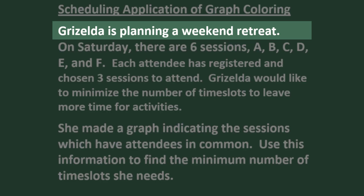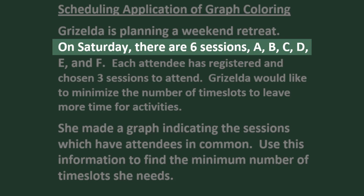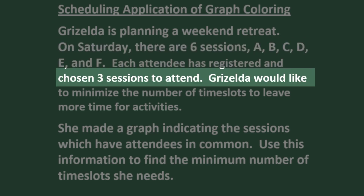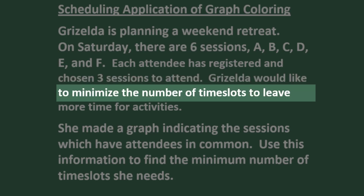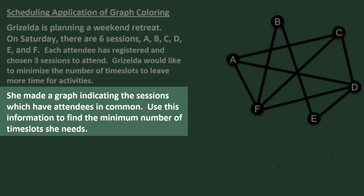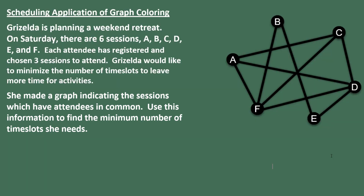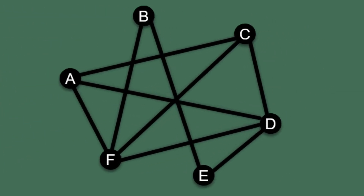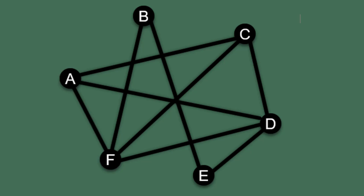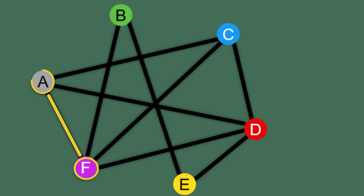Now let's look at this application of graph coloring, which involves scheduling. Griselda is planning a weekend retreat. On Saturday there are to be six sessions — A, B, C, D, E, and F — and each attendee has registered and chosen three sessions to attend. Griselda would like to minimize the number of time slots to leave more time for activities. She made a graph indicating the sessions which have attendees in common. Each vertex represents a session, and if two vertices are adjacent, that means at least one attendee would like to attend both sessions, so Griselda needs to ensure those two sessions are not held at the same time. We can create a graph coloring where each color represents a different time slot — since vertices of the same color are not adjacent, there will be no time conflicts.